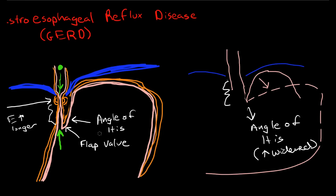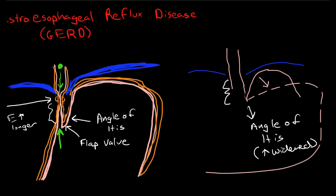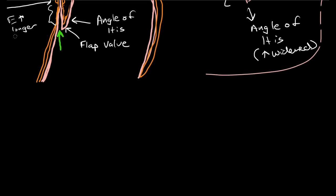And then, obviously, the third thing that can happen is you can just have a hypotonic circular muscle at the lower esophageal sphincter. So that is the three major causes.